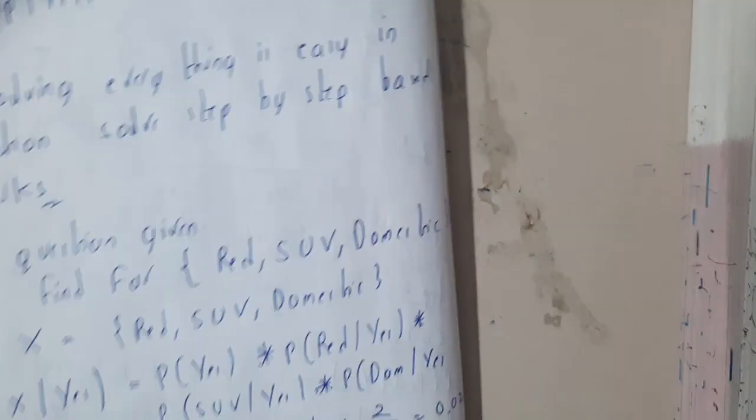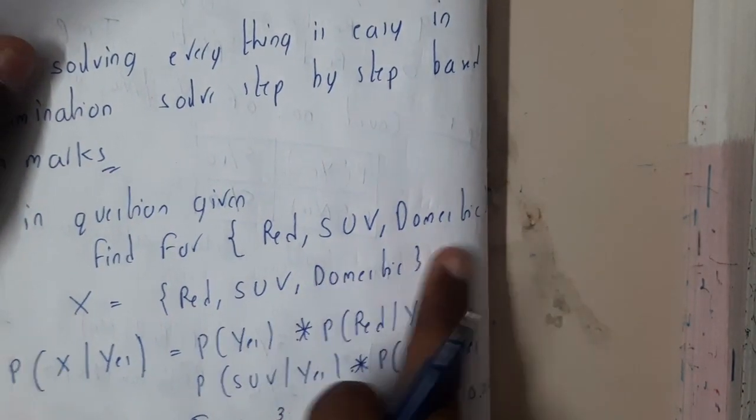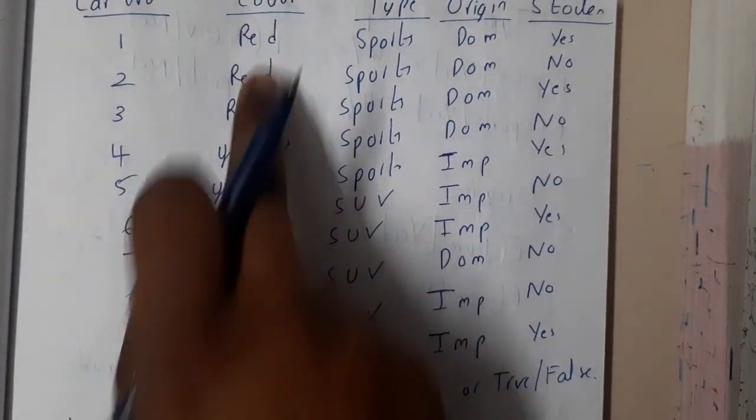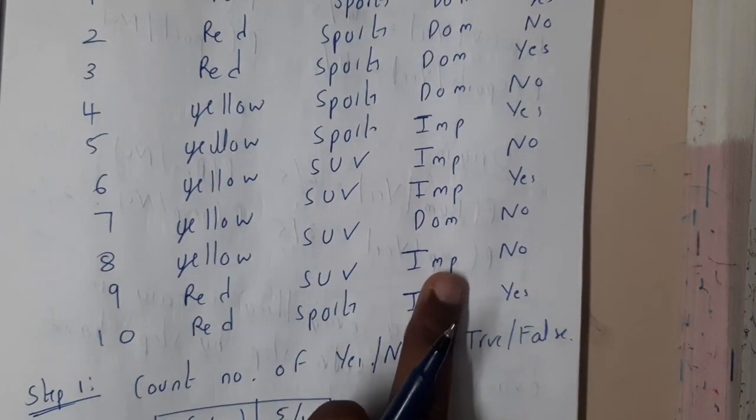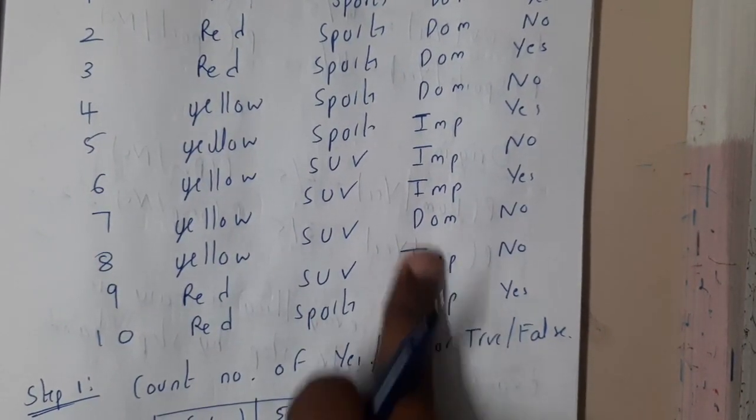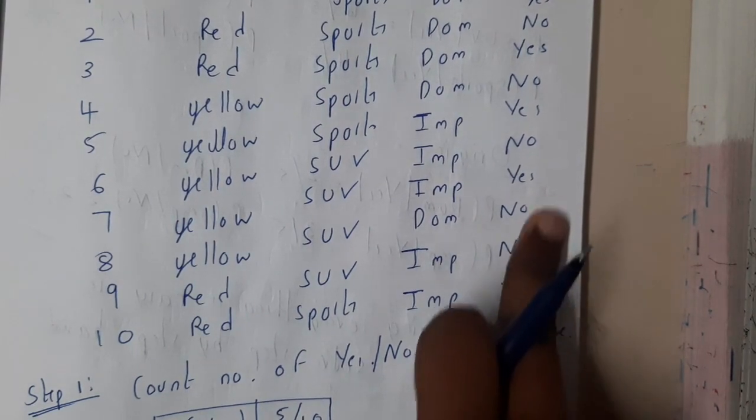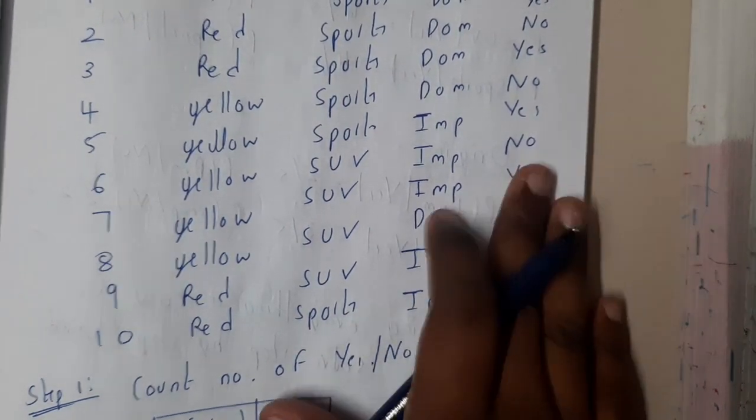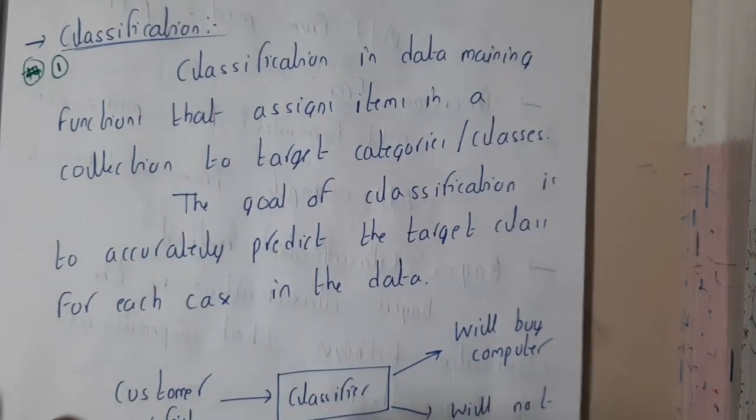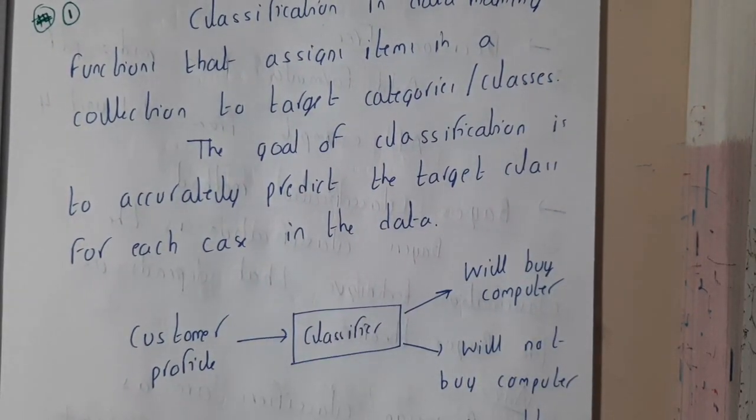If I give some other input, here I am giving an input: red SUV and domestic. We are having one SUV but it is not domestic. So if it is domestic, what will be the situation - yes or no? That answer will be given by our classifier.